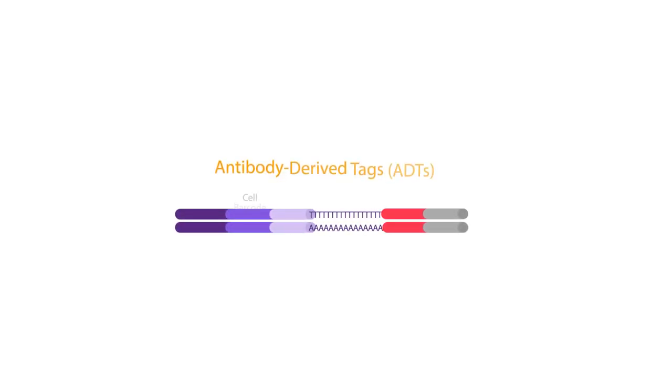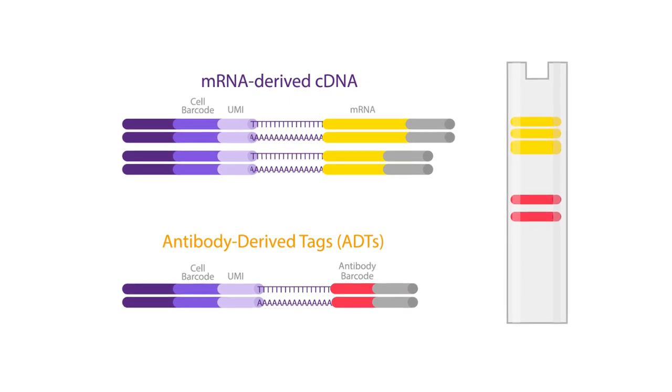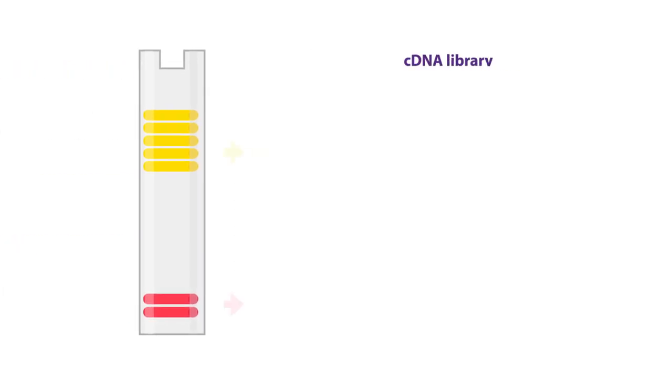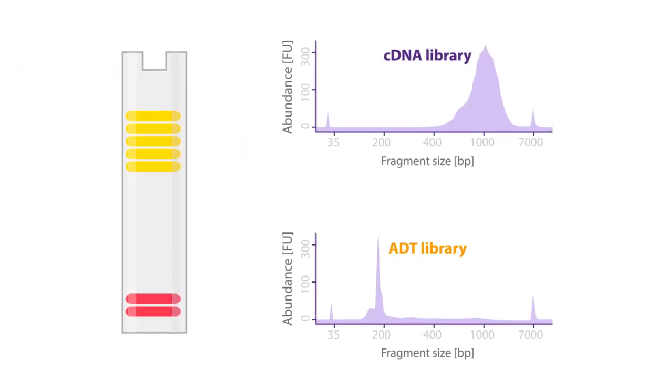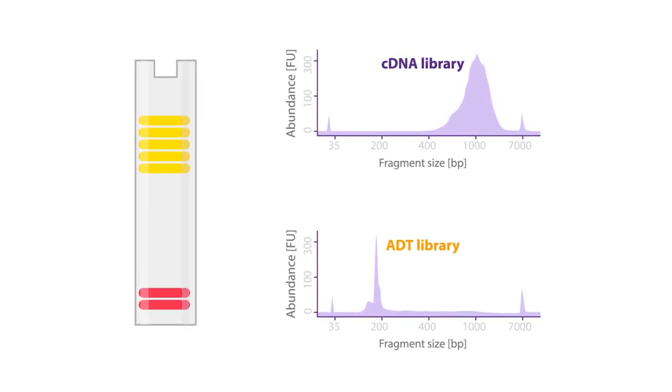Preparing separate TotalSeq ADT and mRNA sequencing libraries is critical for ensuring reliable and balanced proteomics and genomics data. With a small size of only 180 base pairs in length, the TotalSeq barcodes are easily size separated from mRNA-derived cDNA.